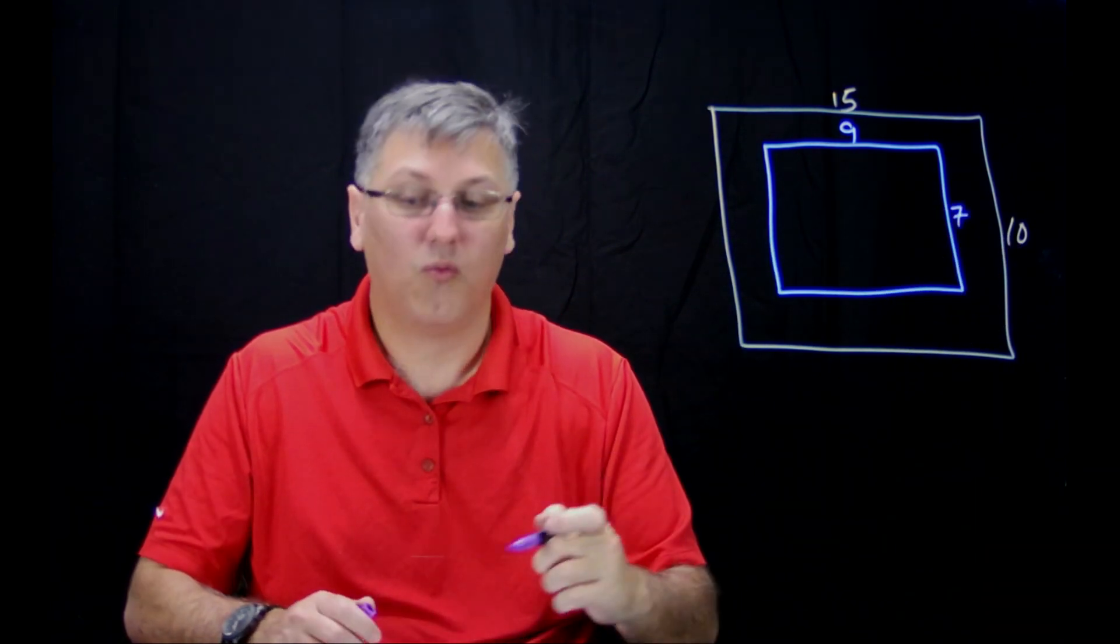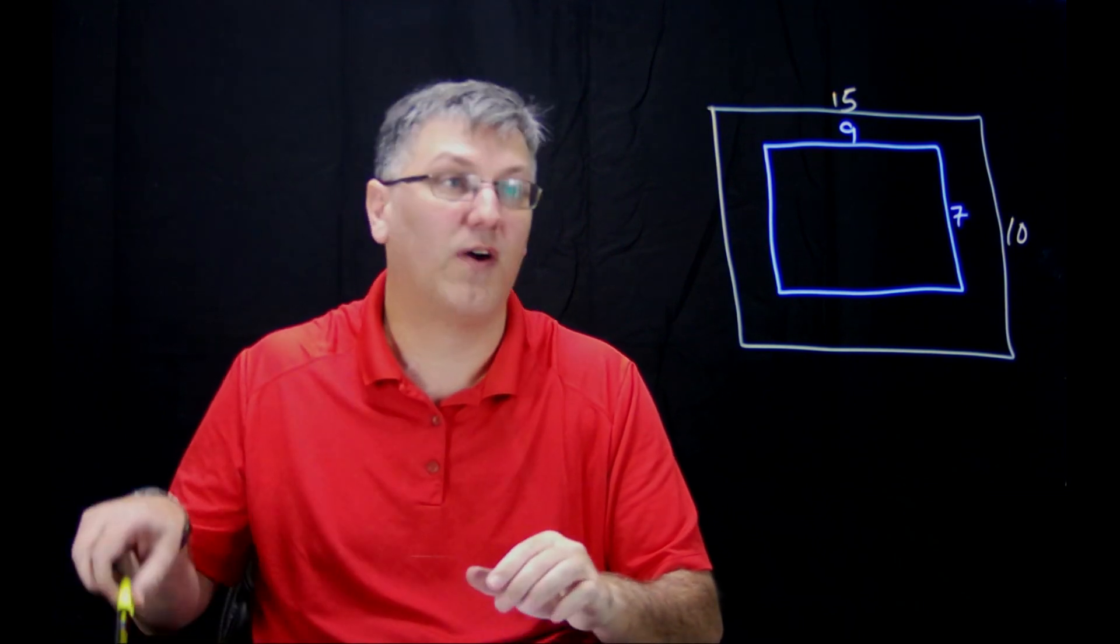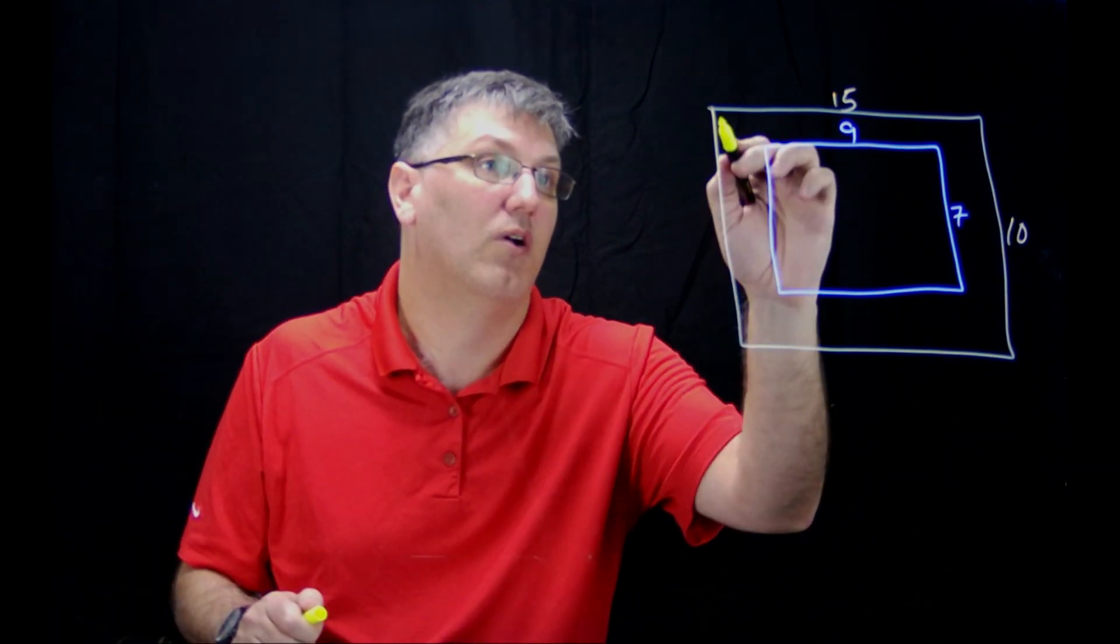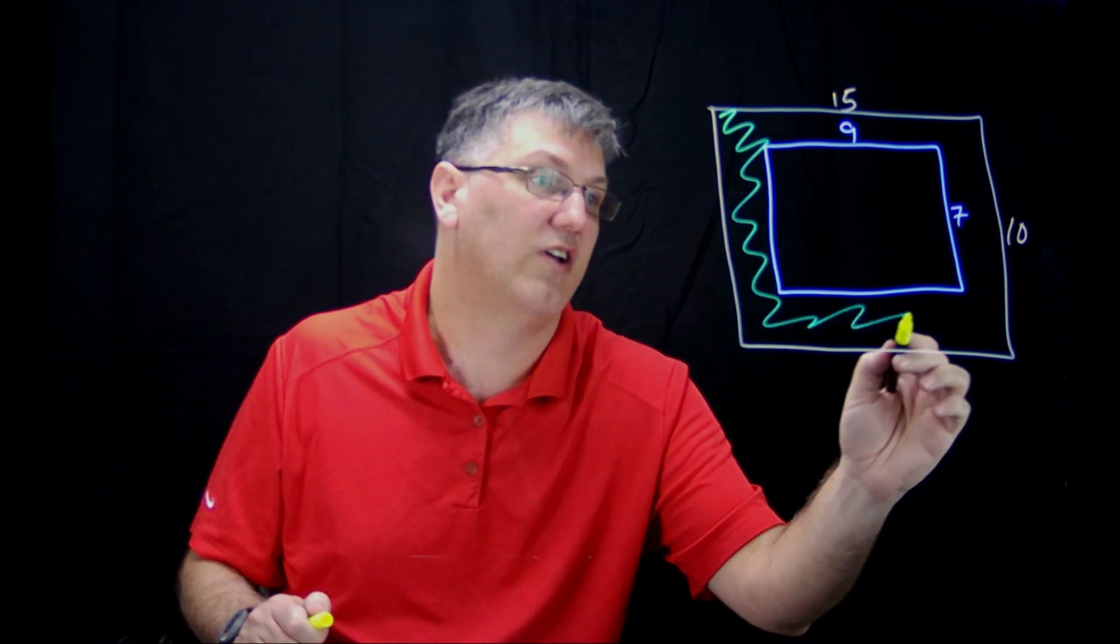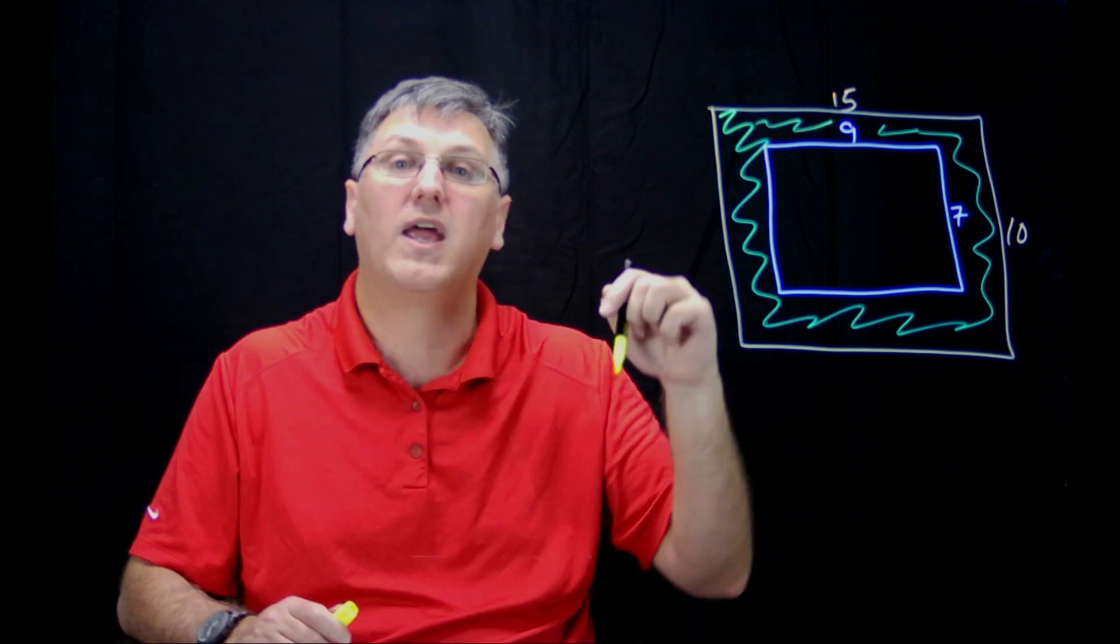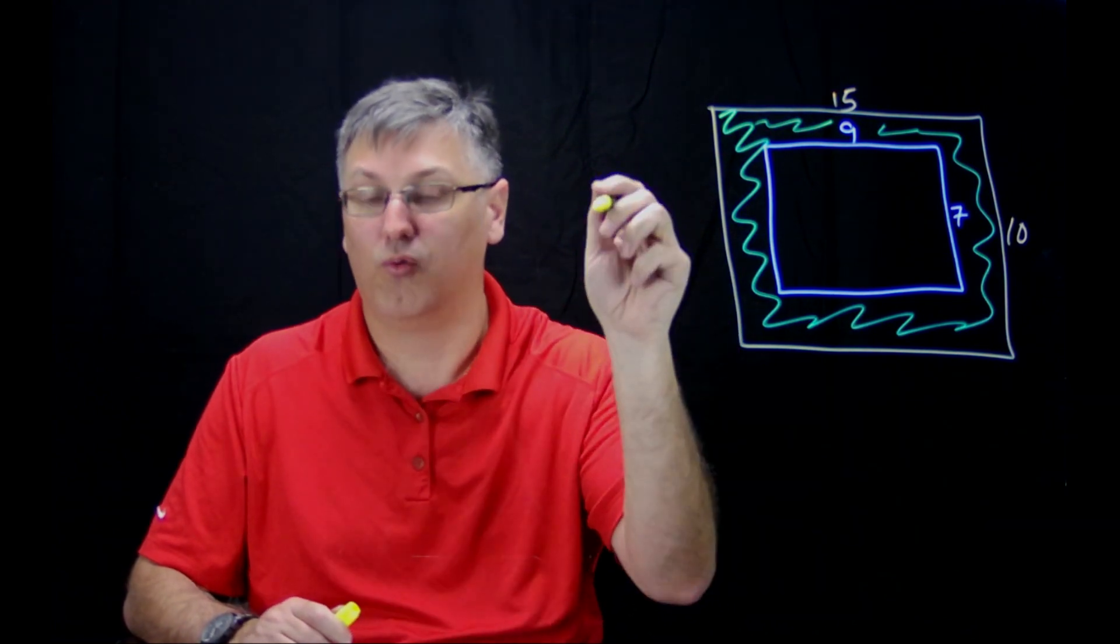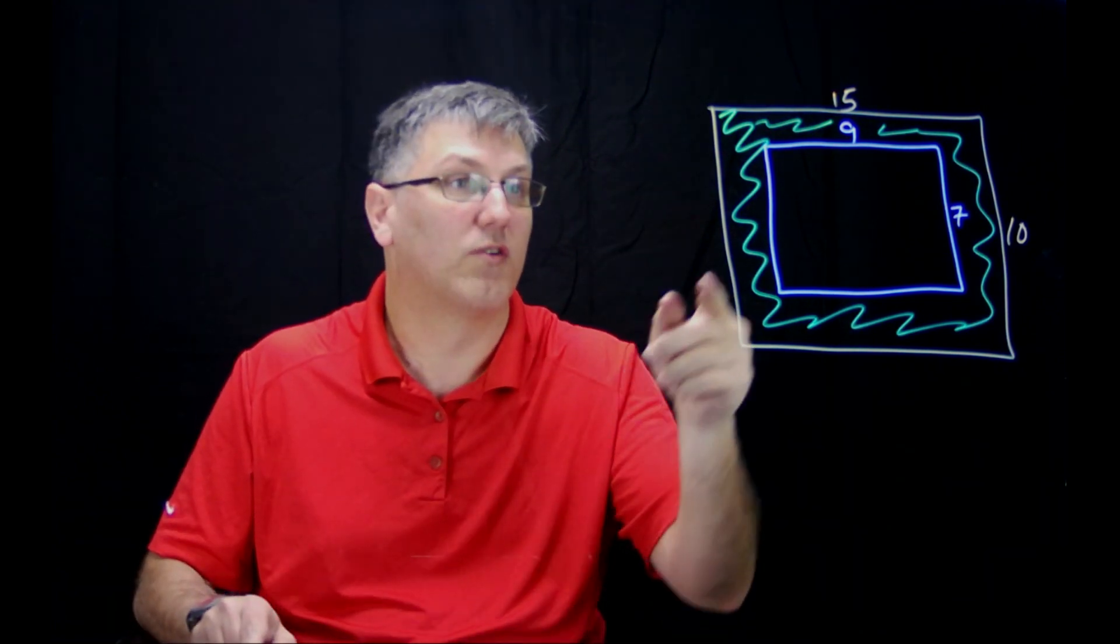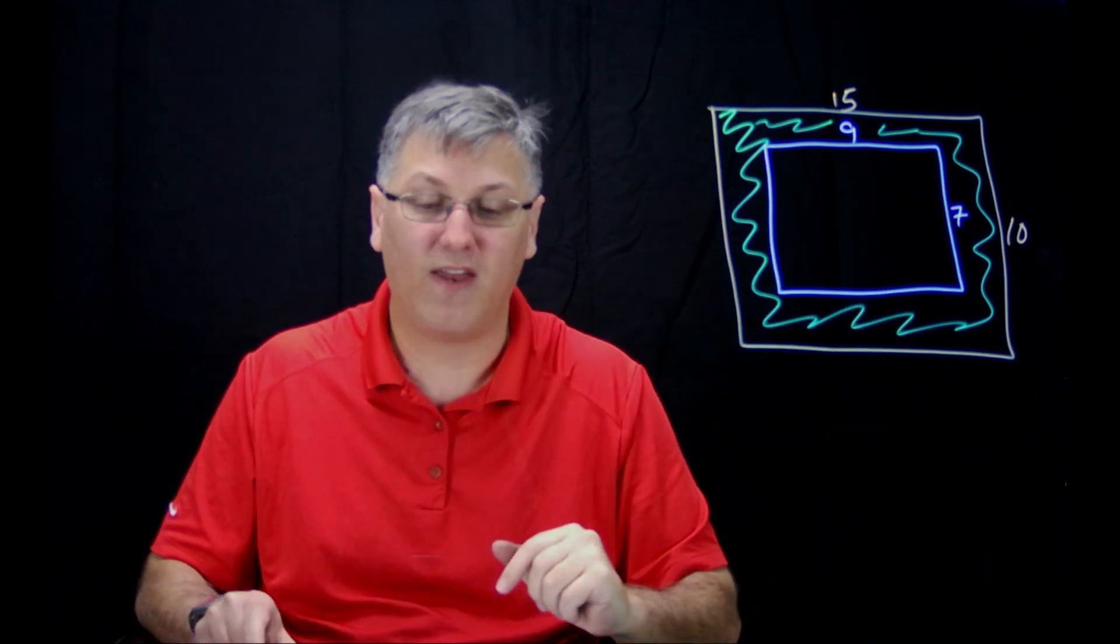Okay, so what is the probability that if I would take a dart and I would throw, that it would land in this outside shaded area right here? If I'm not even aiming and I just randomly throw it, what is the chance, what's the probability I'm going to land in that outside region?